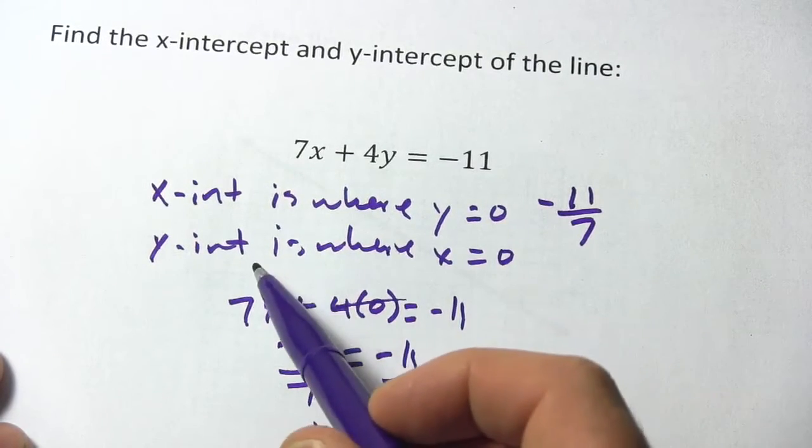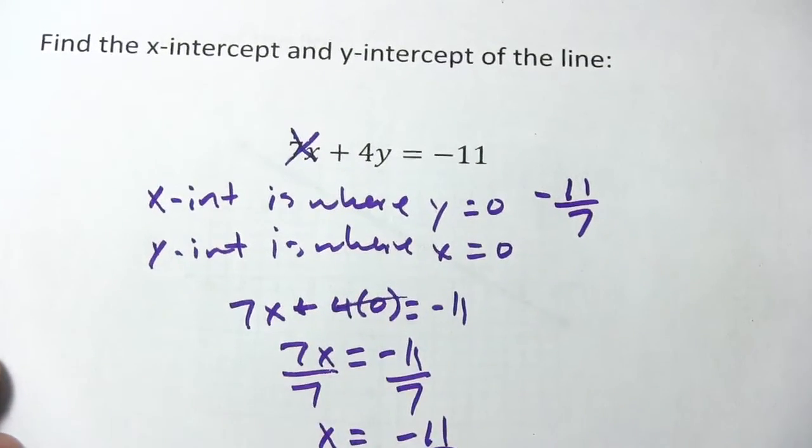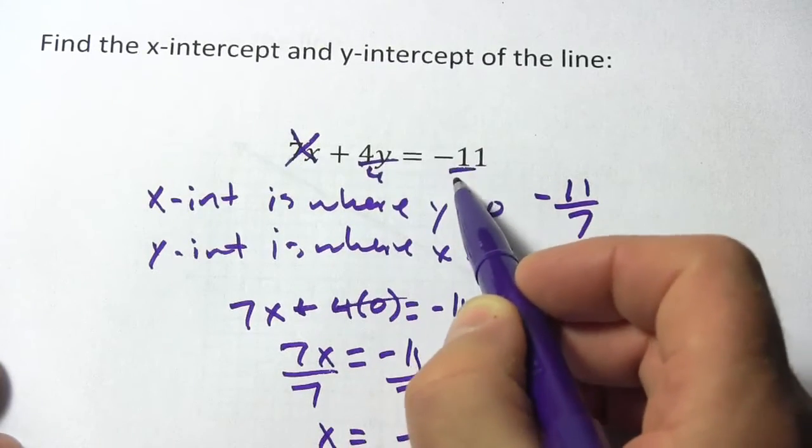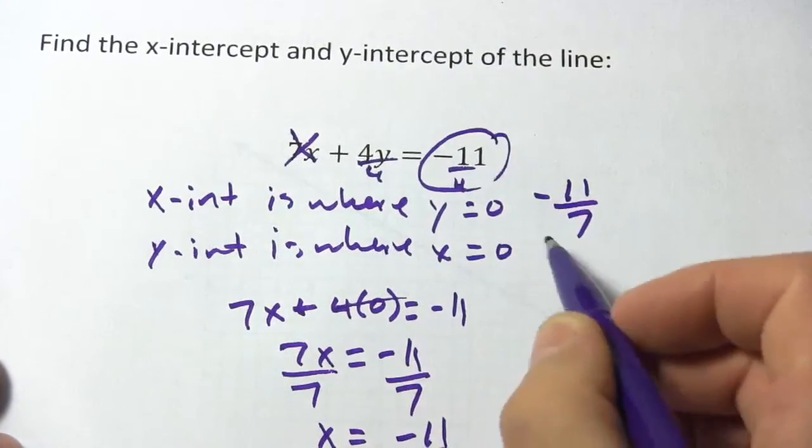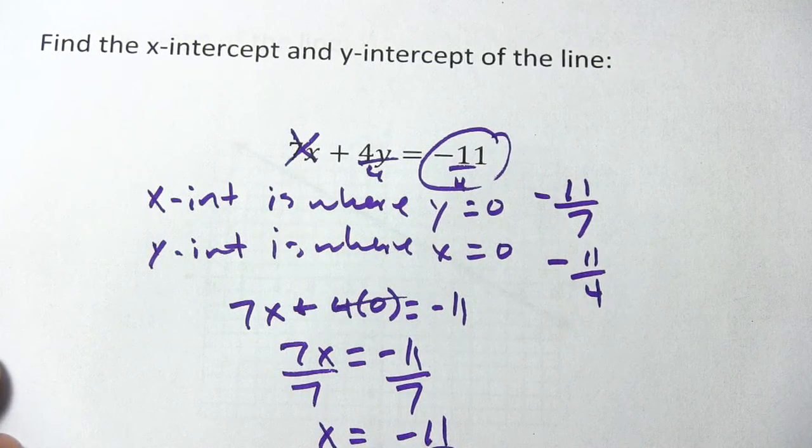And you can do the same thing to find the y-intercept, put in 0 for x. So if you did that, this term would disappear and we just have 4y equals negative 11, divide both sides by 4, you'd get negative 11 fourths for your y-intercept.